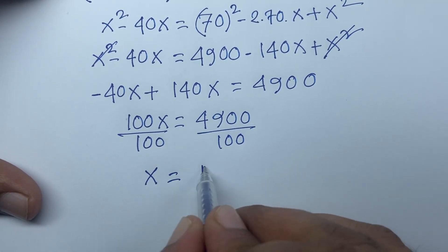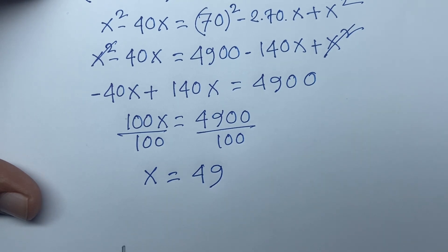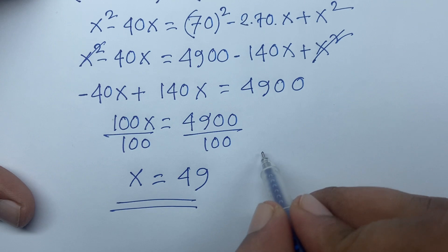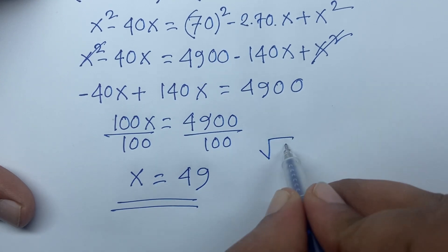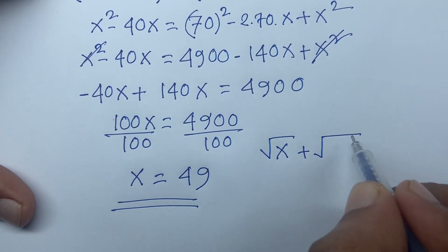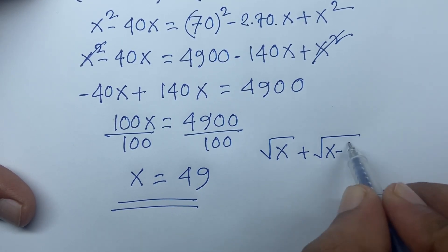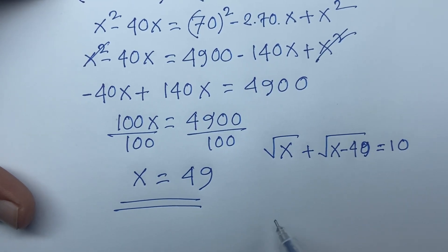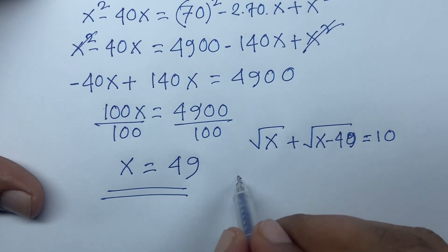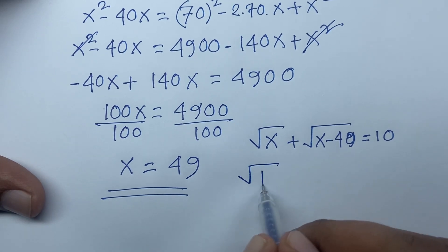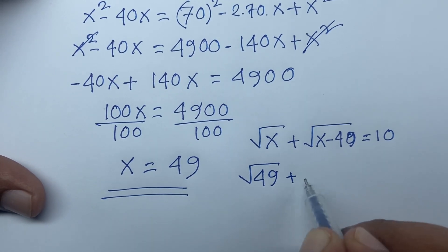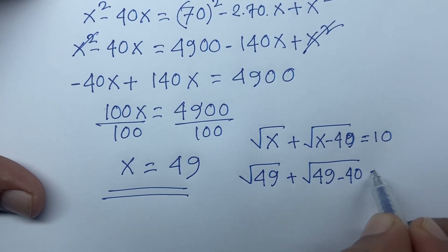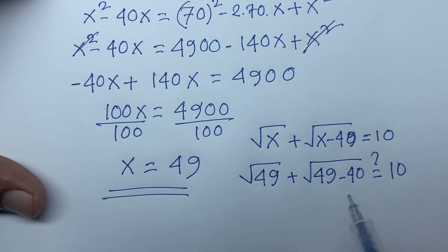Dividing both sides by 100, x equals 49. This is our final answer. Let's verify: the original equation is square root x plus square root x minus 40 equals 10. Substituting x equals 49, we get square root 49 plus square root 49 minus 40.